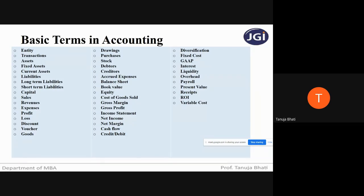Next, what is profit? Profit is the financial benefit that is realized when the revenue generated from business activities exceeds your expenditures or cost. When your revenue exceeds your cost, it becomes your profit — a financial benefit to the entity. What is a loss? A loss is when your expenditure exceeds your revenue.